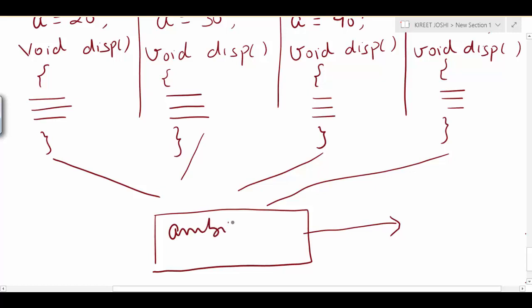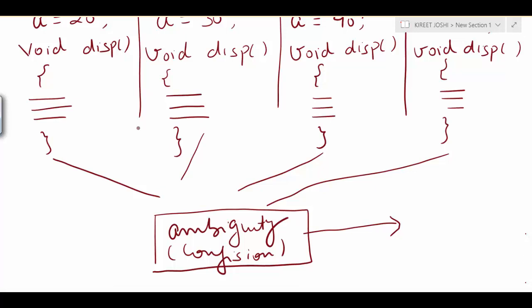Ambiguity arises — the compiler is in a state of confusion because there is a redeclaration of variables and functions with the same names across all modules. The compiler, following its protocol, doesn't know which function to compile. In order to remove this ambiguity so that we can use all these functions and variables collectively in our source code as a single entity, we need a solution.